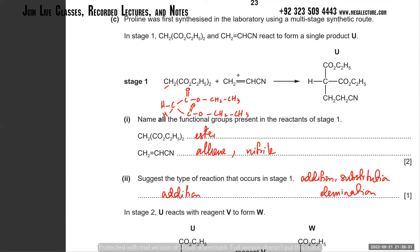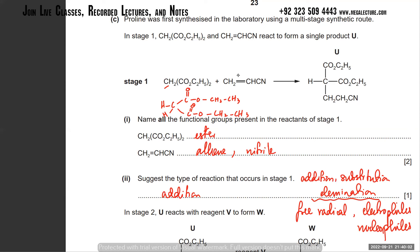Every reaction mechanism will have another adjective associated with it - is it free radical, electrophilic, or nucleophilic? That describes what type of species are involved. The double bond has a lot of negative charge. Who gets attracted to negative charge? Electrophiles. So the carbon over here had a positive charge, got attracted to those electrons and bonded with it - it's probably an electrophilic addition reaction.